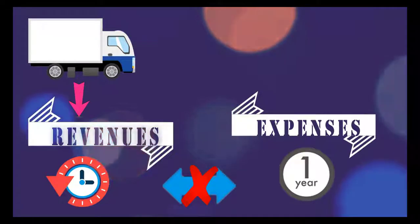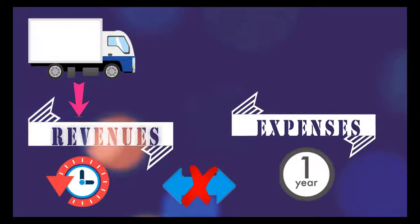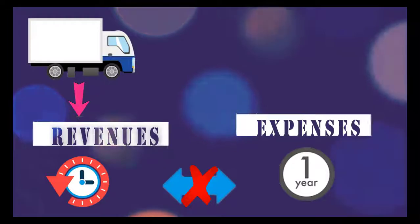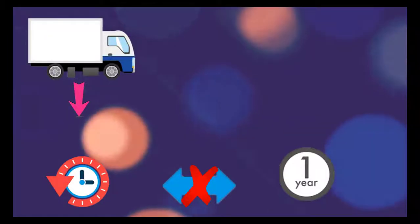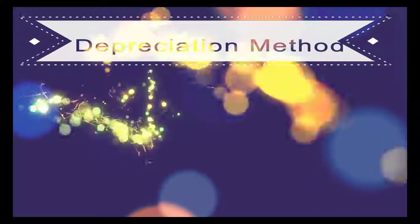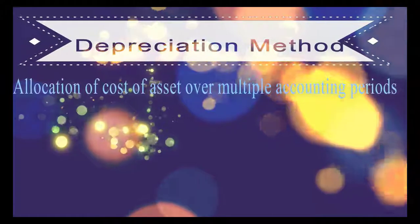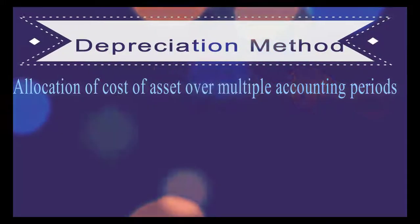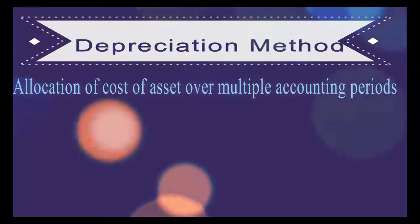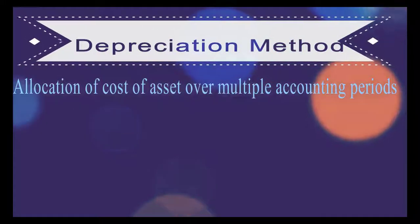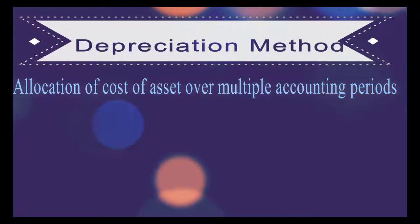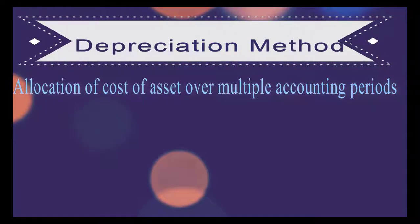So to balance the revenues yearly, we have to allocate the portion of expense against the revenue generated by that asset every year. To do this, some method is found of spreading the cost of the asset over its useful economic life. Thus, depreciation is a process of allocation of the cost of an asset over several accounting periods.